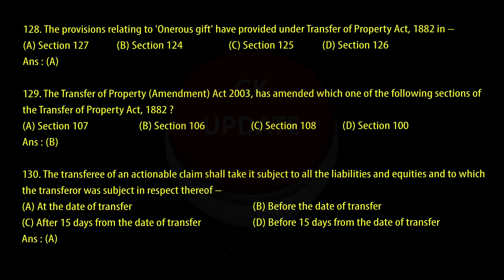Question 128: The provisions relating to onerous gift are provided under the Transfer of Property Act, 1882 in: A: Section 127. B: Section 124. C: Section 125. D: Section 126. Answer: A.